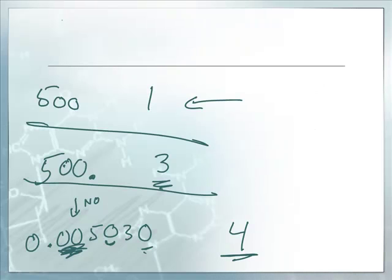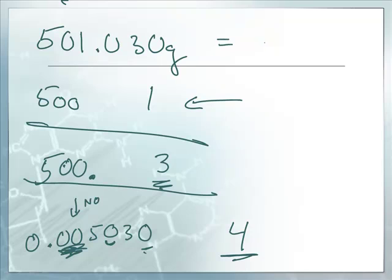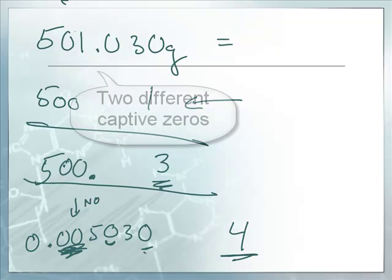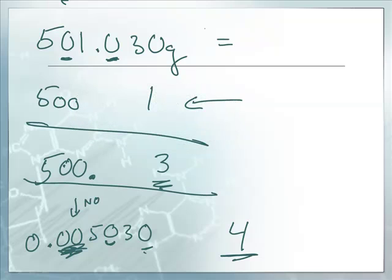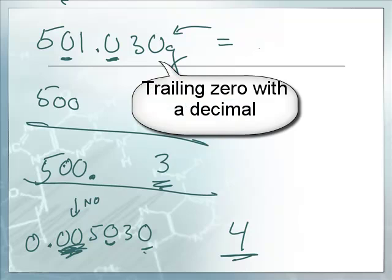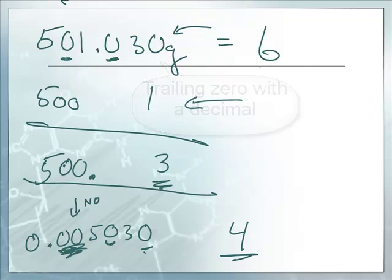Let's do one more combination example. Let's say I have 501.030 grams. So all the captive zeros are significant - that would be this zero right here. The question always is what happens to the zeros? They're captive and I've got a trailing zero. The trailing zero is significant if there's a decimal in the number. I see a decimal. That decimal is there. So the five, the zero, the one, the zero, the three, the zero are all significant. We have six significant figures. Pretty simple. Just count them up.